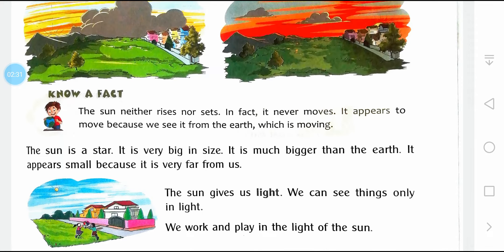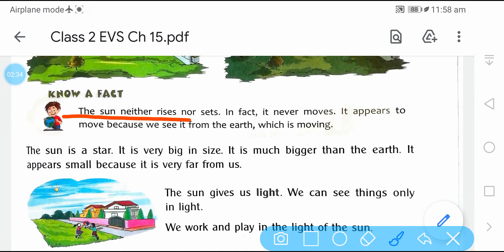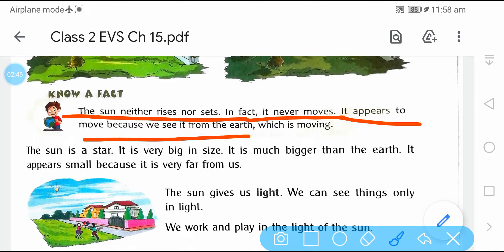The sun neither rises nor sets — sun ना तो निकलता है, ना डूबता है. In fact, it never moves — वो कभी हिलता ही नहीं है. It appears to move because we see it from the Earth, which is moving. Earth move करता है, rotation और revolution — इसलिए हमें लगता है कि sun, moon, या clouds move कर रहे हैं, पर वो move नहीं करते. It's the Earth जो move करता है.